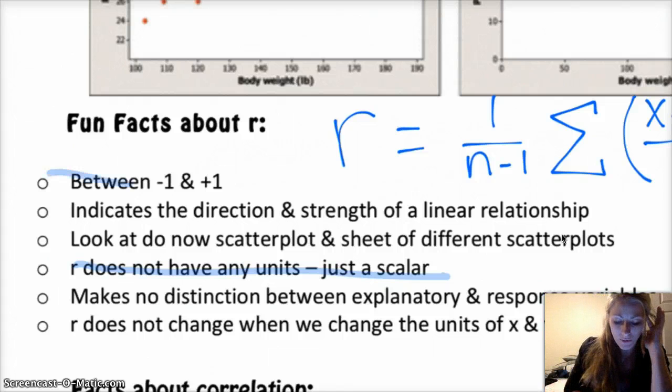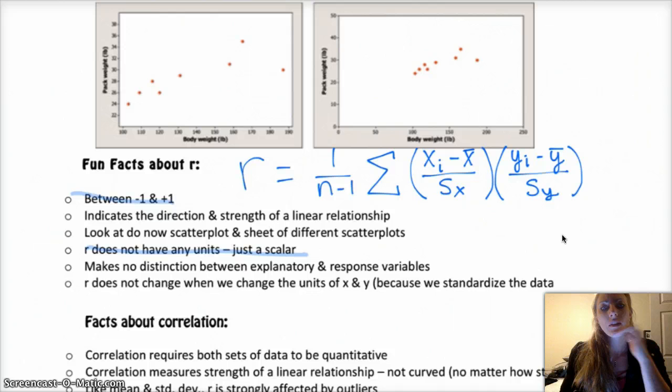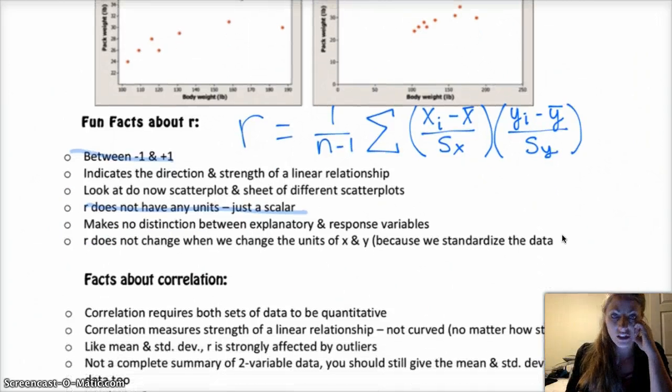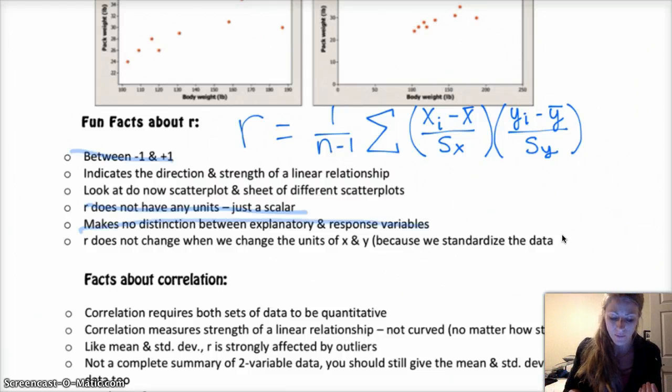It's between negative 1 and positive 1. Indicates the direction and strength of a linear relationship, we already talked about that. And it makes no distinction between explanatory and response variables. So if you were to flip your graph and put your x on your y axis, your r would remain the same. That's important.